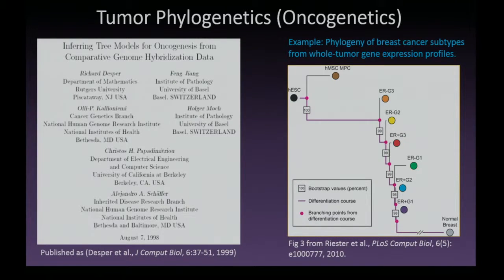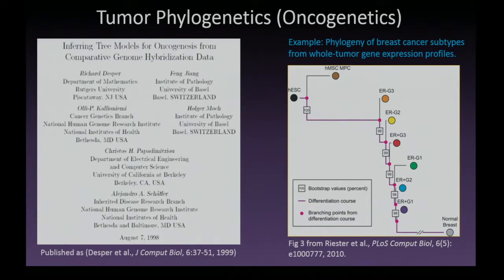That led originally to a body of work by the authors shown here, and I wanted to pause to offer an interesting anecdote told to me just a few days ago by Alejandro Schaefer, one of the authors of this original work and one of my collaborators today. When I told him I was coming to this meeting, he told me that by an incredible coincidence, exactly 20 years ago this week, the field of tumor phylogenetics was born right here at Berkeley, coming out of a meeting between Alejandro and Christos Papadimitriou. So it's really a privilege to be back here at the birthplace of tumor phylogenetics on its 20th anniversary.